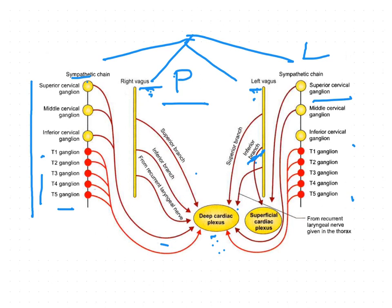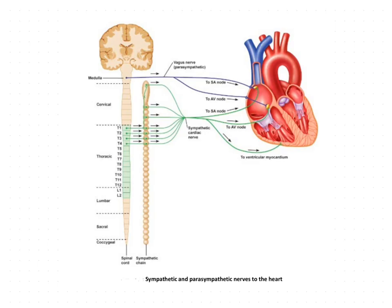Now we will see where these cardiac plexuses are located. The superficial cardiac plexus is situated just below the arch of the aorta, and it also gives branches to the deep cardiac plexus.